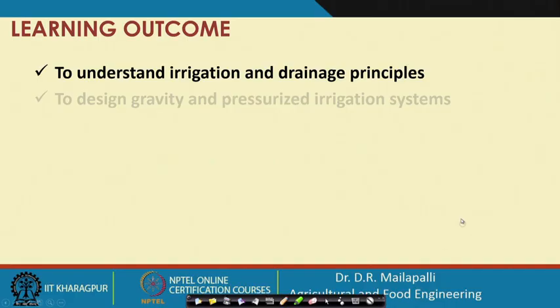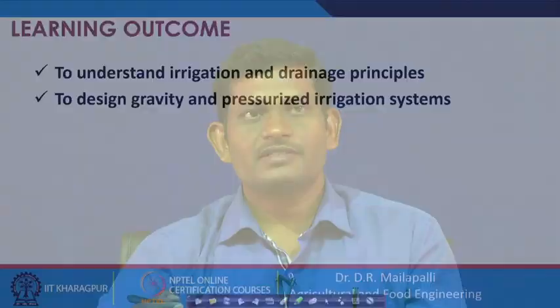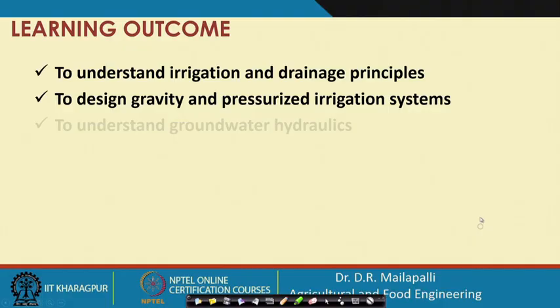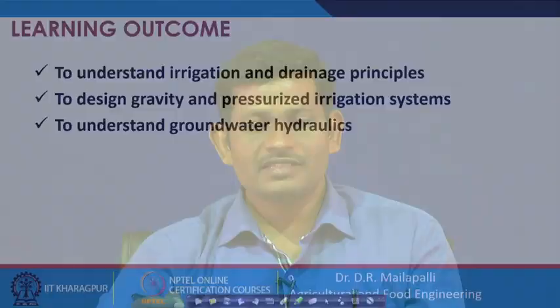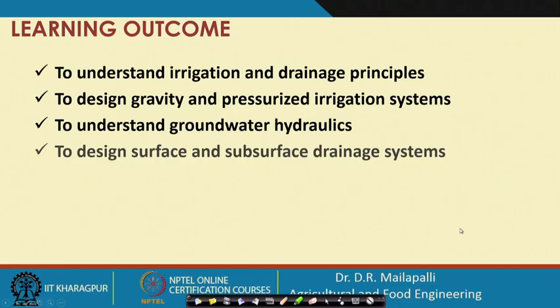The learning outcomes of this course include understanding irrigation and drainage principles, which is important to design an irrigation or drainage system, and to design gravity and pressurized irrigation systems. Surface irrigation uses gravity force without a pump, whereas pressurized irrigation systems such as micro-irrigation or drip irrigation require pressurization so that water passes through drippers or sprinklers. The course also covers understanding groundwater hydraulics — how water flows from the surface to drains — and designing surface and subsurface drainage systems.